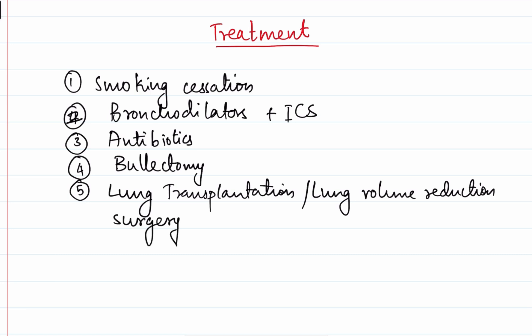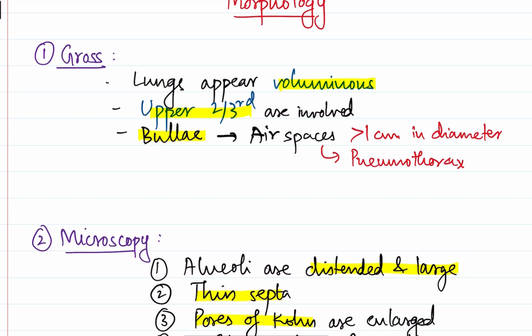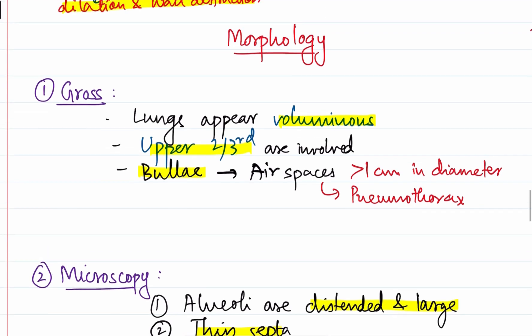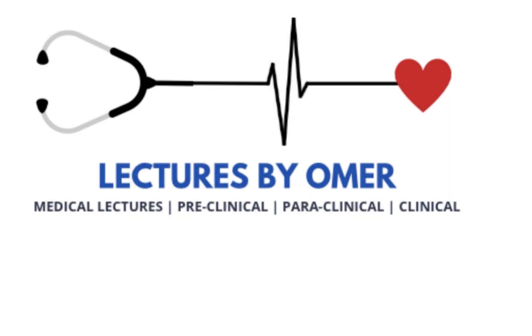To summarize: COPD is a preventable, treatable disease with persistent respiratory symptoms and airflow limitation. Emphysema involves the acinus, with major pathological changes of airspace enlargement and lung wall destruction. The most common cause is tobacco smoking. The patient presents with an insidious onset of dyspnea which progressively worsens, with no hypoxia, along with weight loss and chronic cough with expectoration.